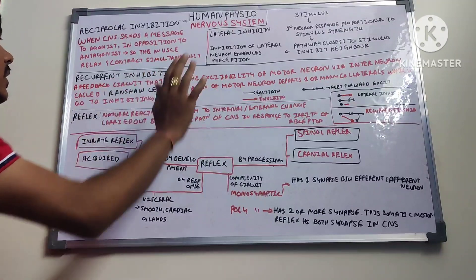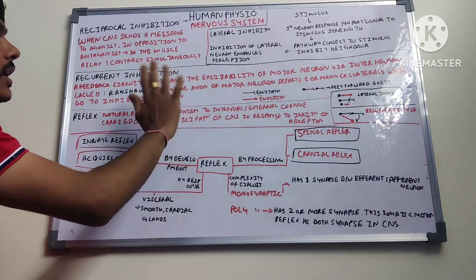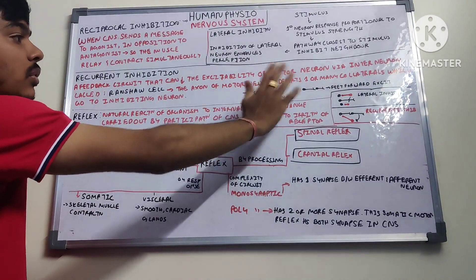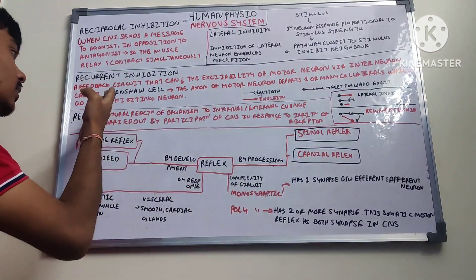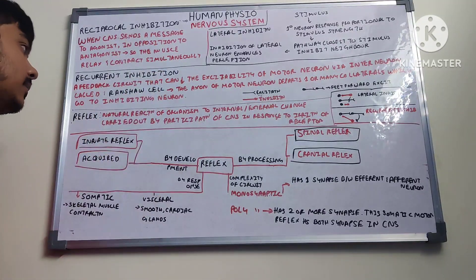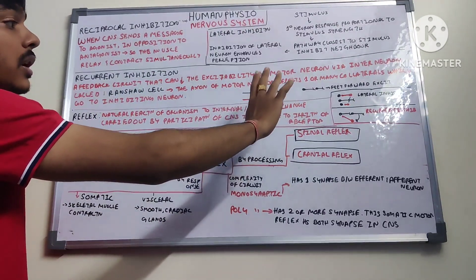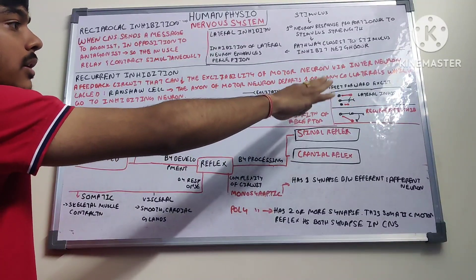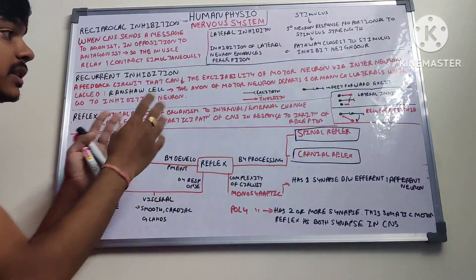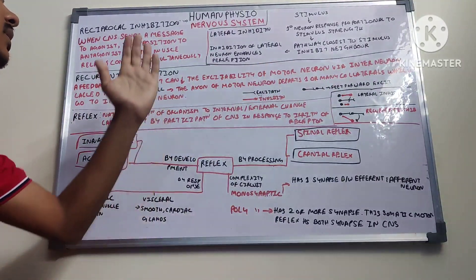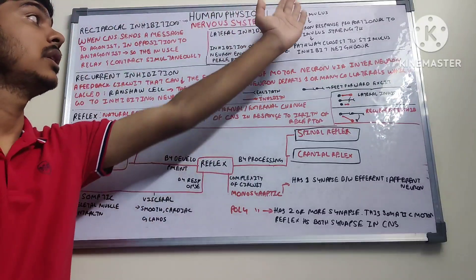Recurrent inhibition: an efferent circuit decreases the excitability of a motor neuron via an interneuron called the Renshaw cell. The axon of the motor neuron sends collaterals to the inhibiting interneuron. Lateral inhibition: the stimulus is given and the primary neuron responds proportionally to the stimulus strength.